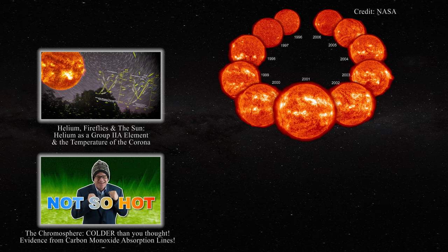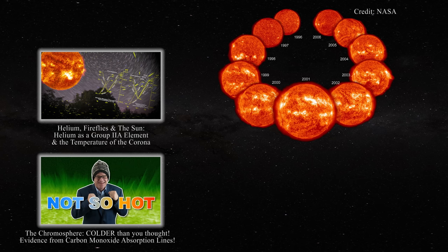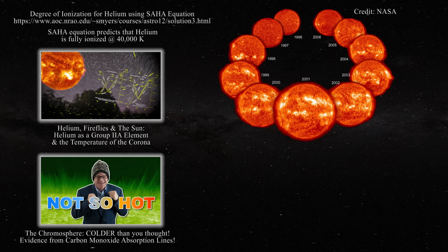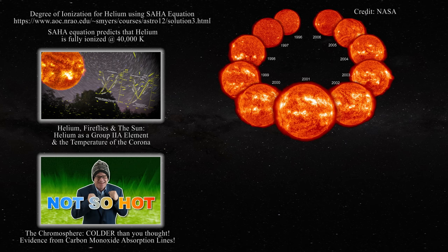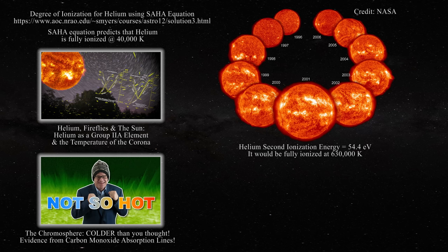If the corona were truly at millions of Kelvin, one would never be able to obtain helium images from this region of the Sun, as the element would be fully ionized at temperatures well below 1 million Kelvin. An astronomy website was referenced wherein the Saha equation was utilized to predict that helium would be fully ionized at only 40,000 Kelvin. Using a simple plasma physics argument with helium's second ionization energy of 54.4 electron volts, complete ionization would occur at 630,000 Kelvin — well below accepted coronal temperatures. So, the corona is not at millions of Kelvin.